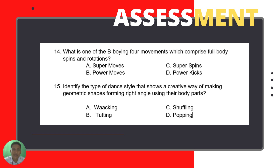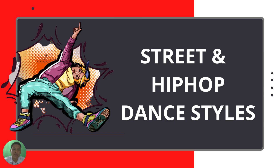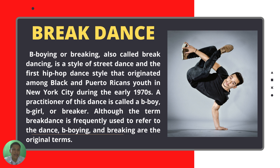Let's start now with our discussion on street and hip-hop dance styles. First, we have b-boying, or breakdancing. It is a style of street dance and the first hip-hop dance style, originating among Black and Puerto Rican youths in New York City during the early 1970s. A practitioner is called a b-boy, a b-girl, or breaker. Although 'breakdance' is frequently used, b-boying or breaking are the original terms.